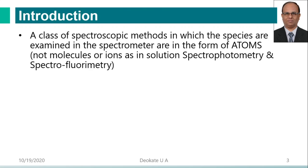The class of spectroscopic methods in which the species are examined in spectrophotometers are in the form of atoms. So either we are using the molecules or ions in some cases — those are called spectrophotometry or spectrofluorometry, molecular spectroscopy or molecular spectrofluorometry. Here we are using the atoms.